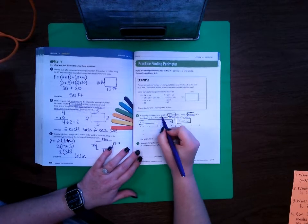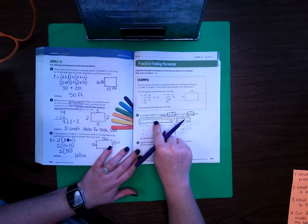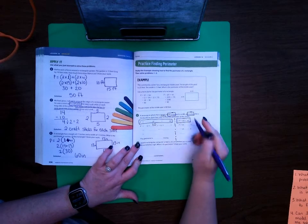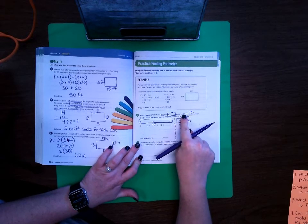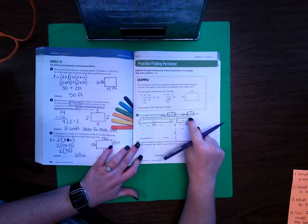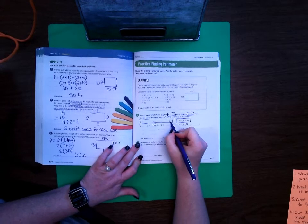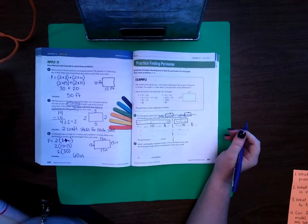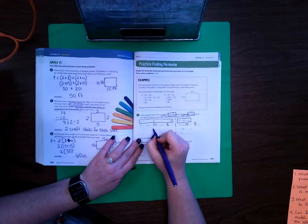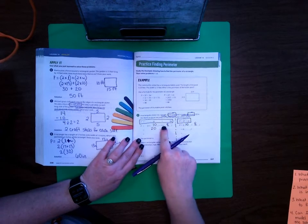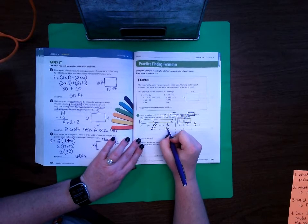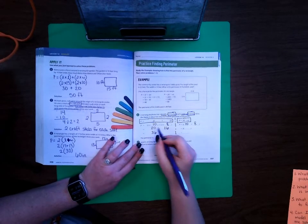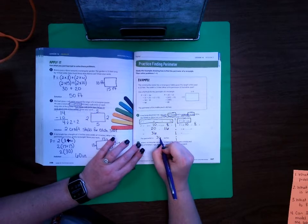So it says here the length is 10 inches. So anywhere where we see the L, we're putting a 10. And anywhere where we see a W, we're putting an 8. So there's a W and a W. Now we're ready to solve our problems. So 2 times 10 is 20, 2 times 8 is 16, 20 plus 16 is 36. So the perimeter is 36 inches.